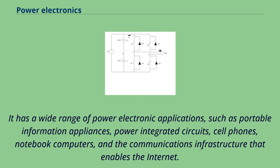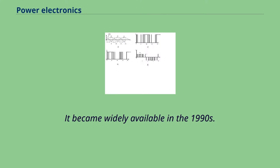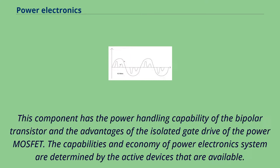The power MOSFET has a wide range of power electronic applications, such as portable information appliances, power-integrated circuits, cell phones, notebook computers, and the communications infrastructure that enables the internet. In 1982, the insulated gate bipolar transistor was introduced, becoming widely available in the 1990s. This component has the power handling capability of the bipolar transistor and the advantages of the isolated gate drive of the power MOSFET.